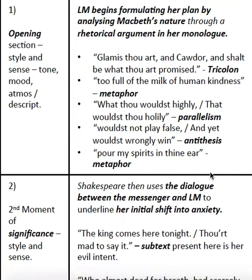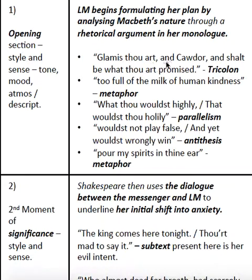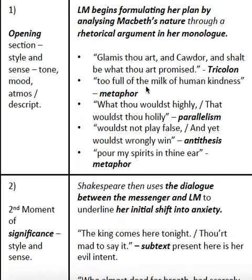Then what we have here is fairly straightforward — quotations from that section of the extract that are elements of rhetorical argument. The opening, 'Glamis thou art, and Cawdor, and shalt be what thou art promised,' that example of tricolon gives us that sense of certainty. Her metaphor that she uses to describe Macbeth's personality, 'too full of the milk of human kindness,' she is using this to convince herself that Macbeth needs her assistance.